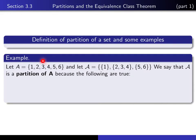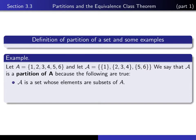Here we have a set A — the set of integers from 1 through 6. And here we have script A, which is a collection of subsets of A consisting of three sets. We refer to this collection of subsets of A as being a partition of A, because of the following properties that it has. First of all, each of the elements of this collection is a subset of A.